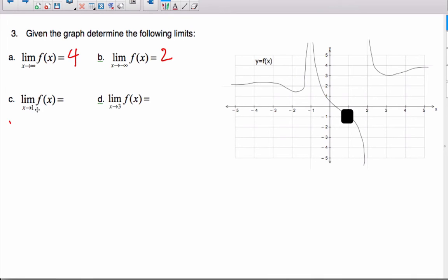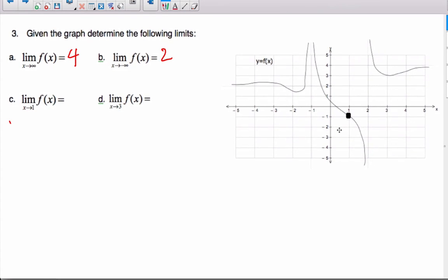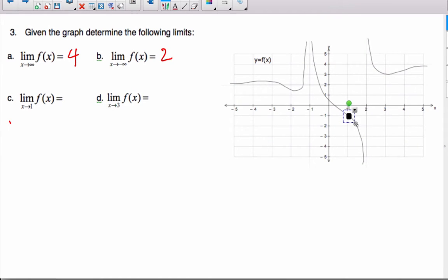Okay? So imagine that you don't know what is here. So if I'm going to do the limit as x goes to 1, I'm going to look as it goes closer to 1 this way and closer to 1 this way, and I would guess it's going to be -1. It does not matter what the actual value is. It's what you think it's supposed to be. What should it be? And it clearly looks like it should be -1.